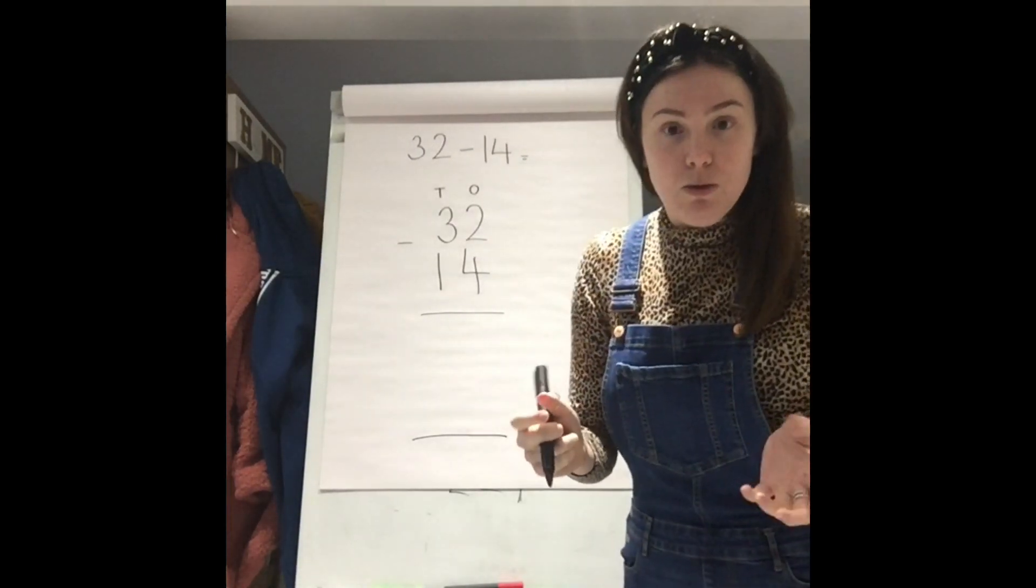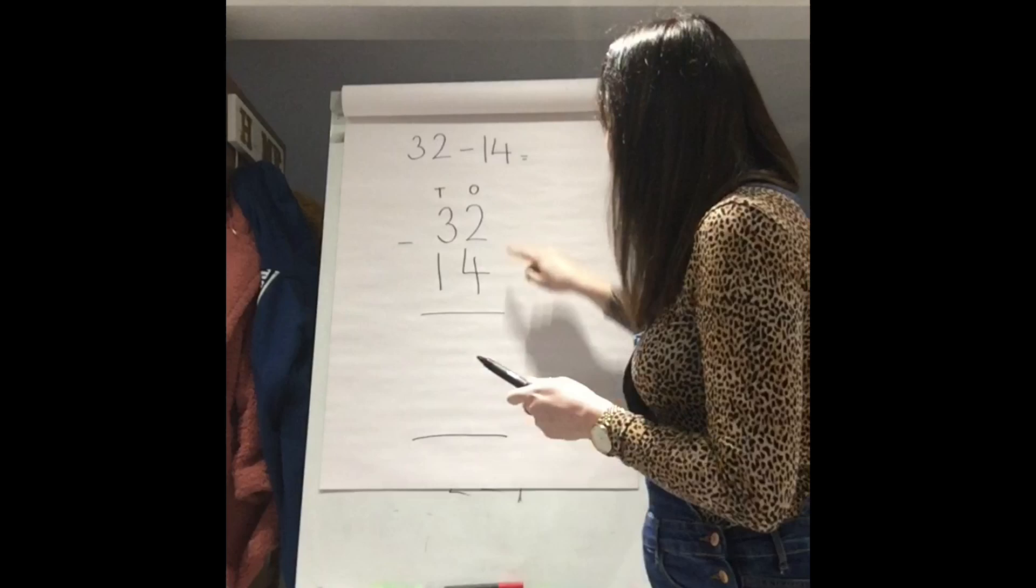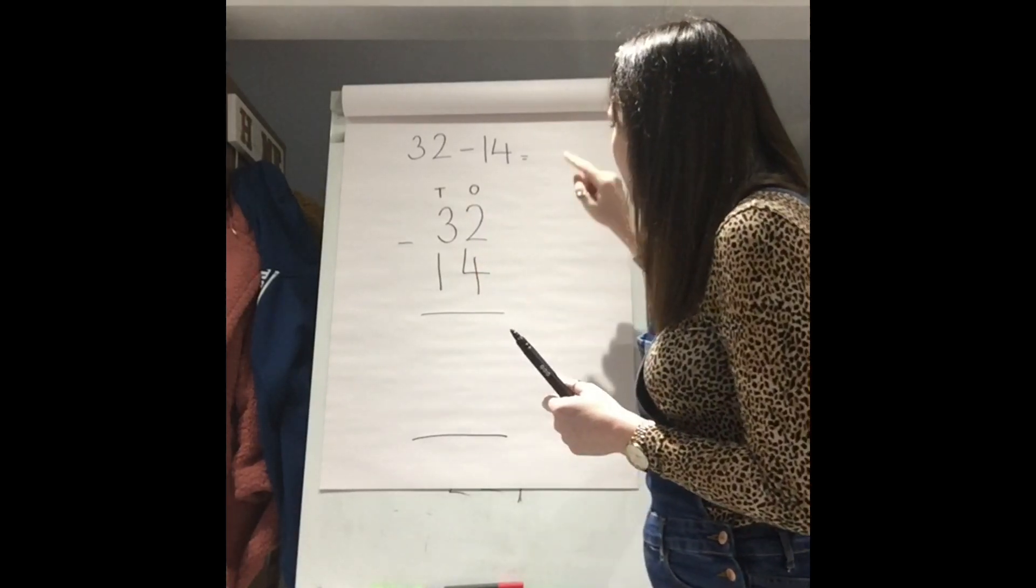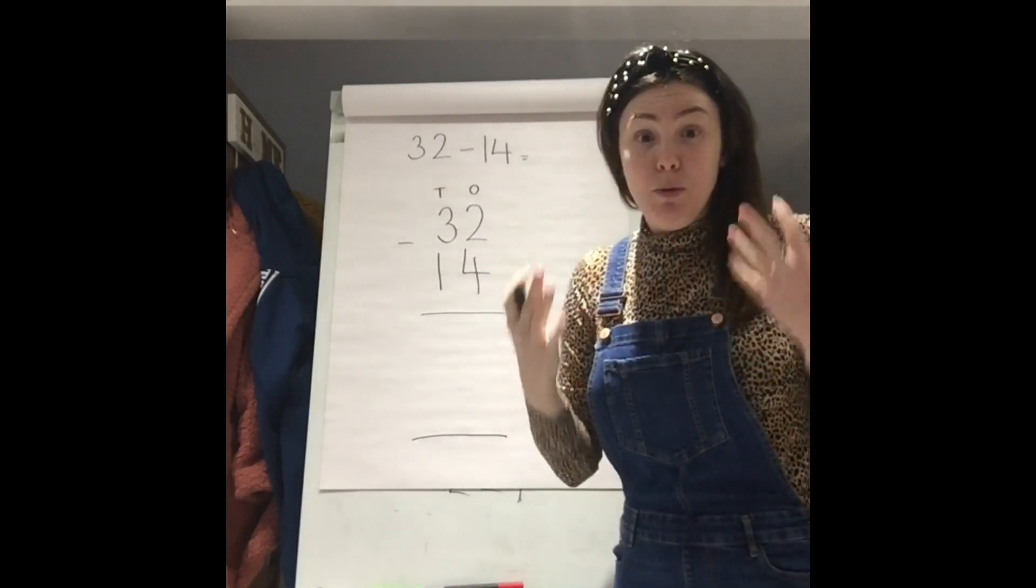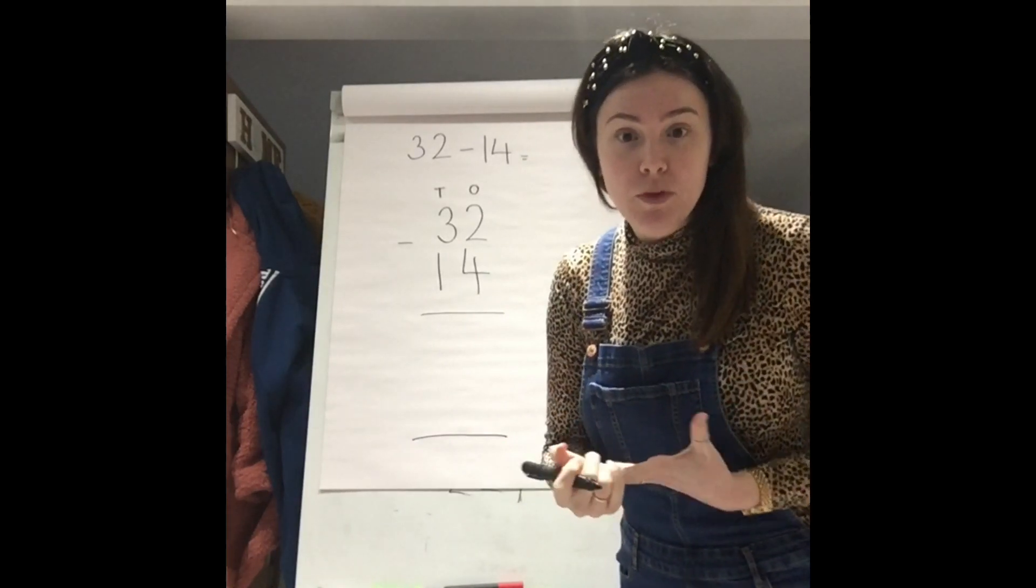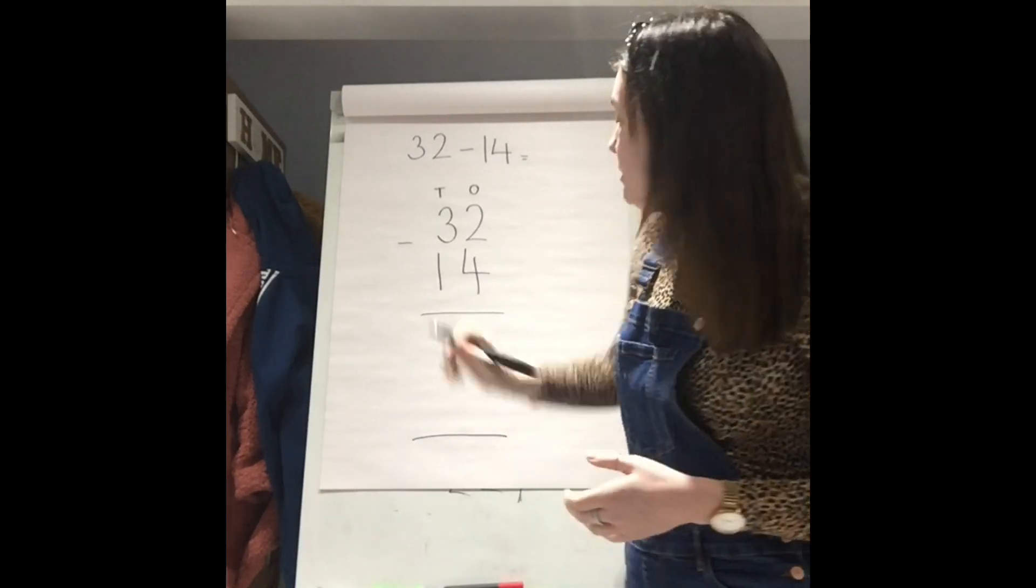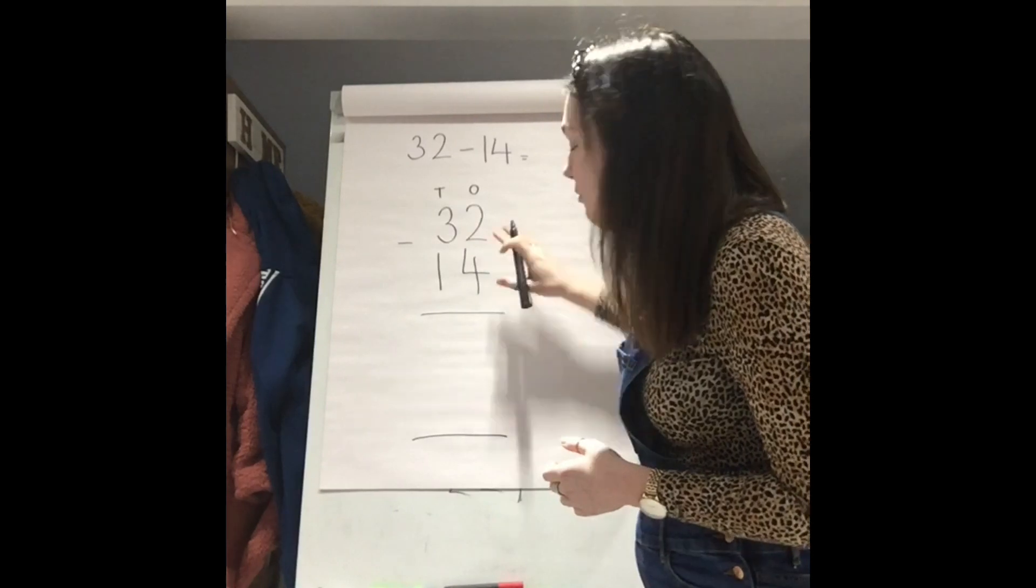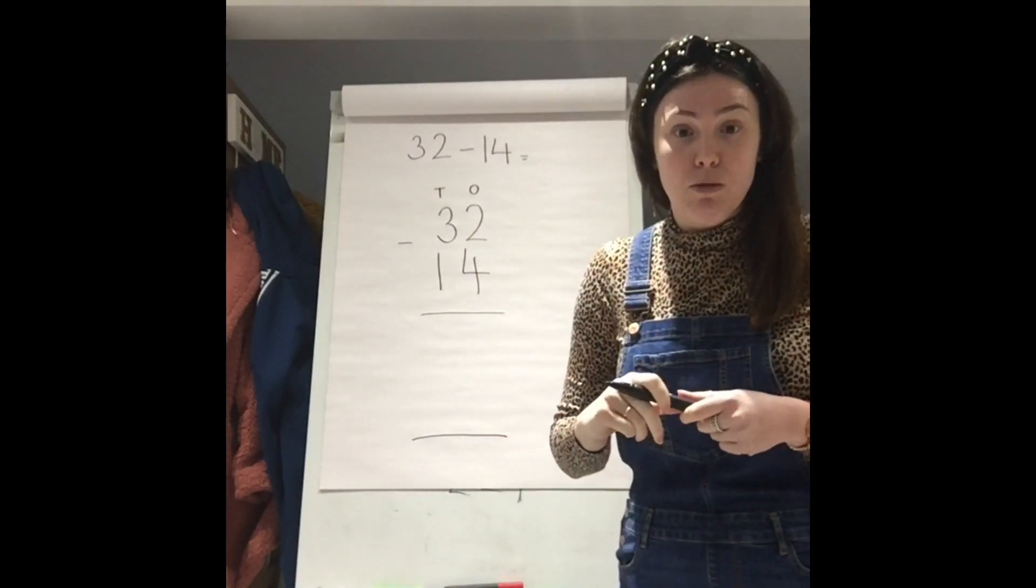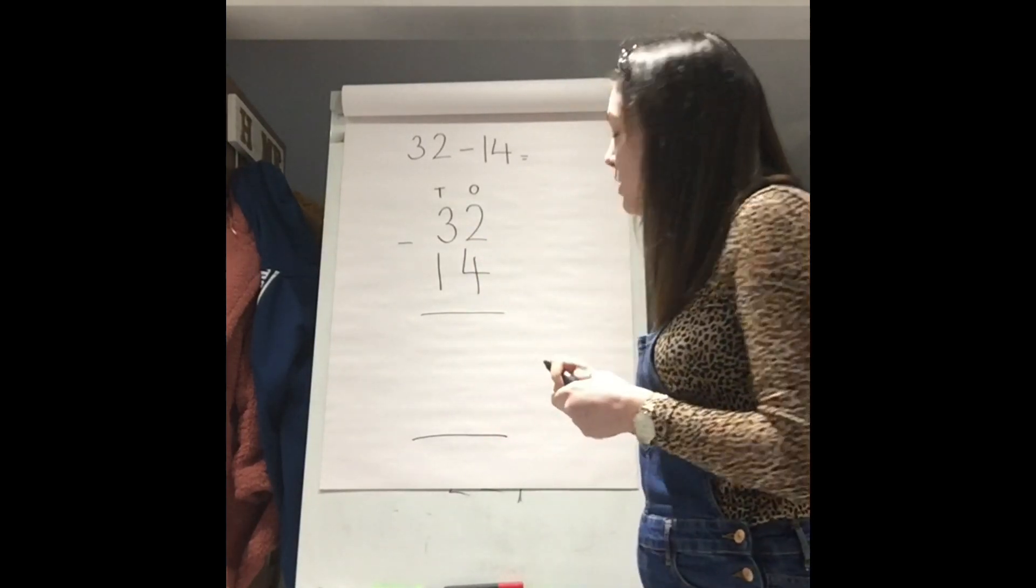And make sure I've got my 1s column and my 10s column labelled. And the first thing we need to do is we need to work out our 1s column. 2 take away 4. But we've got a little bit of a problem. We're going to need to exchange because we cannot take away 2 from 4 whilst we are doing the column method for subtraction. So what are we going to do?